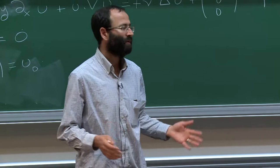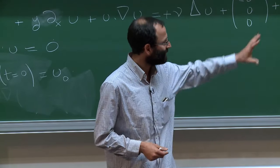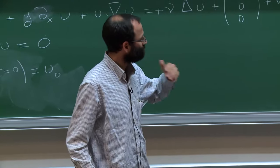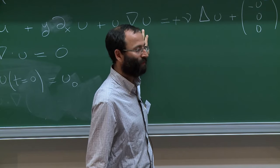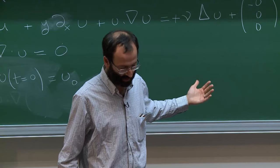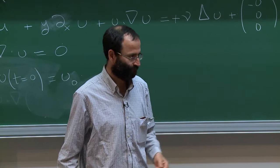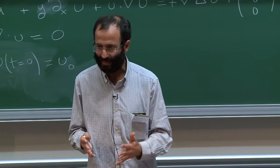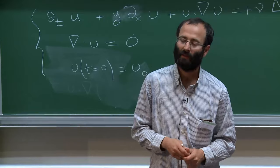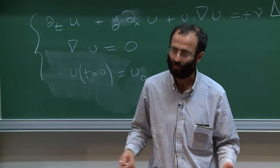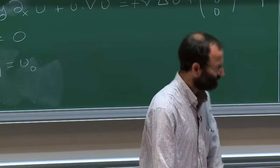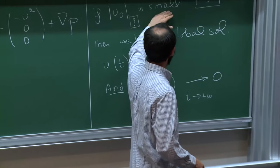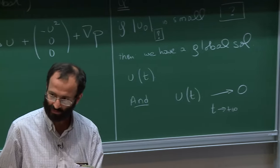During that period there was something called the Sommerfeld paradox, which is exactly related to our question. If you linearize the equation, you expect to have linear stability. But in experiments, people were not really able to observe the Couette flow as stable. The reason — related to the result I will present — is that the smallness condition depends on the viscosity. The perturbation you can allow is very tiny compared to the viscosity.